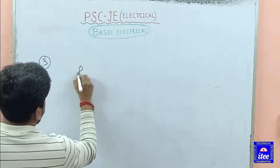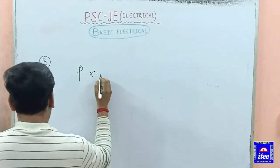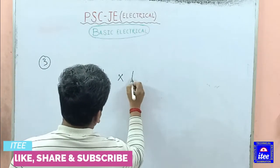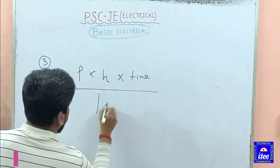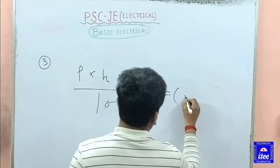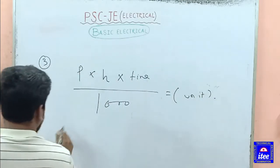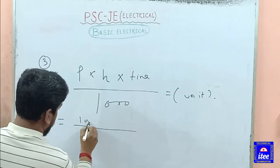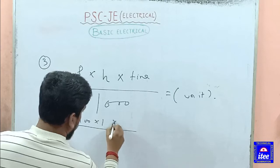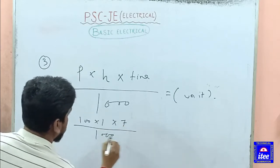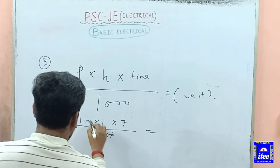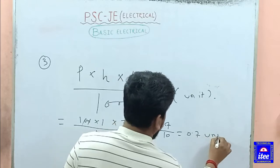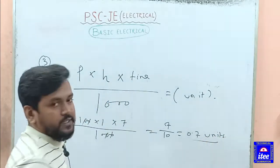The power is 100 watts. In 1 hour, that is 10 hours per day. That means 7 days. That is 100 watts times 10 hours times 7 days = 7000 watt-hours = 7 kWh. Dividing: 7 by 10, that is 0.7 units. So 0.7 units is the energy consumption.